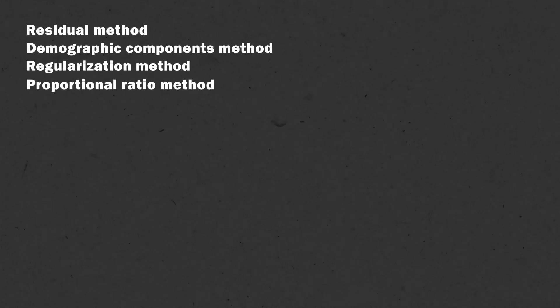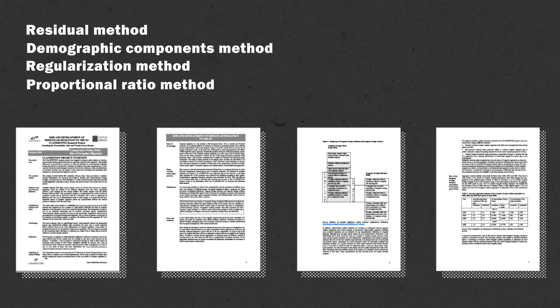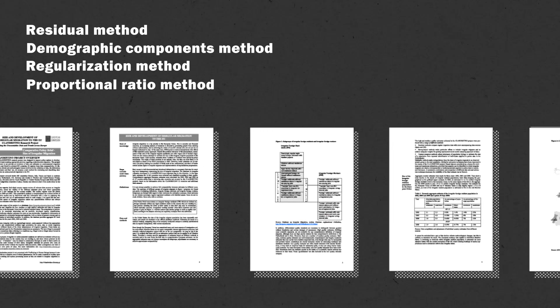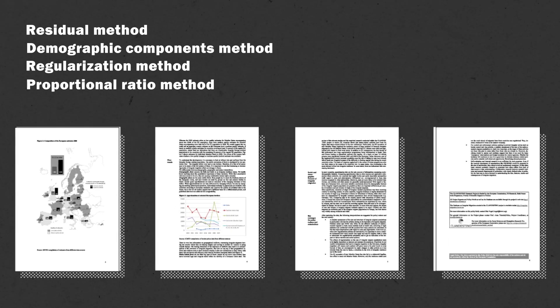These were some of the same approaches used by European researchers about 10 years ago for the Clandestino Project, which estimated the number of irregular immigrants in Europe at that time. We also consulted with more than 25 researchers, including many from that project, to help us better understand the data and best method for each country.